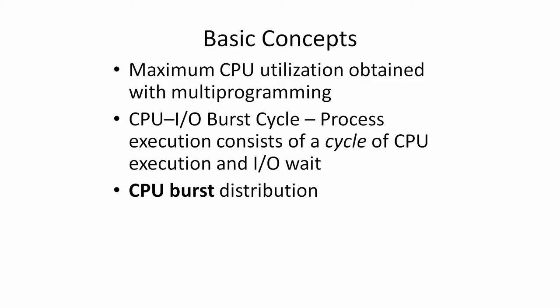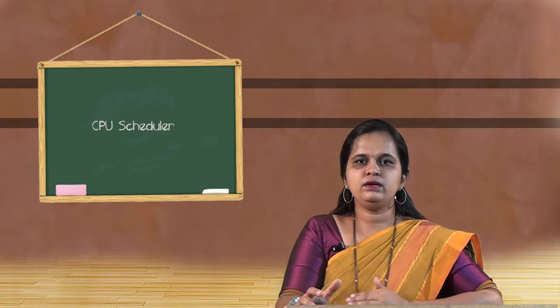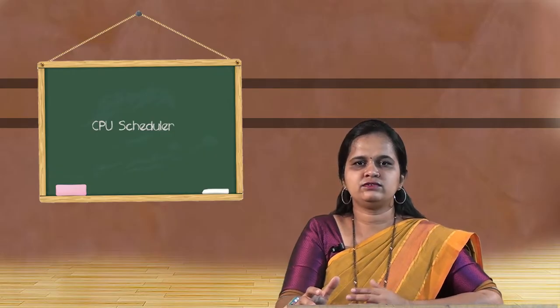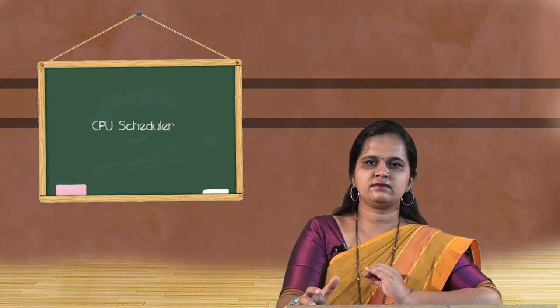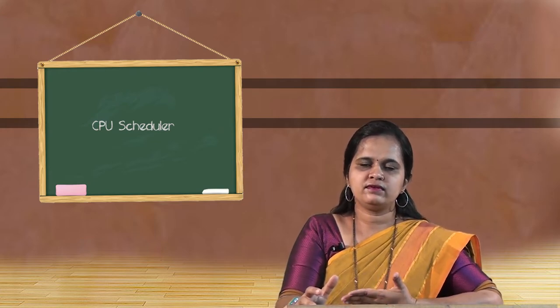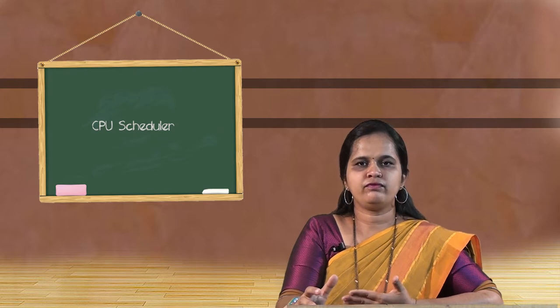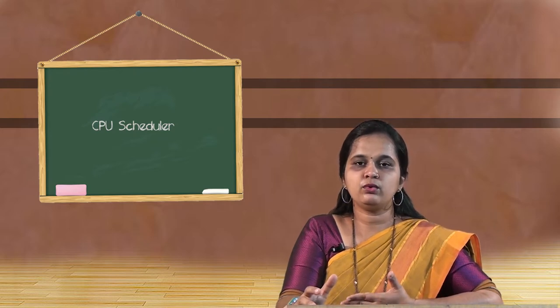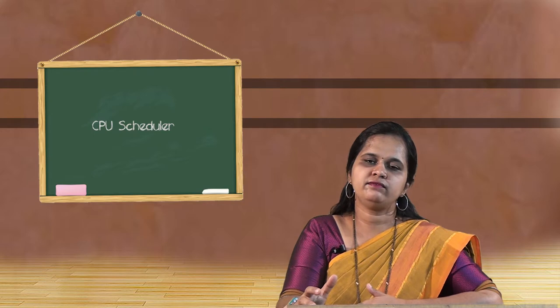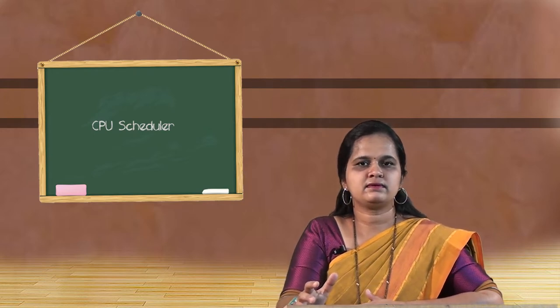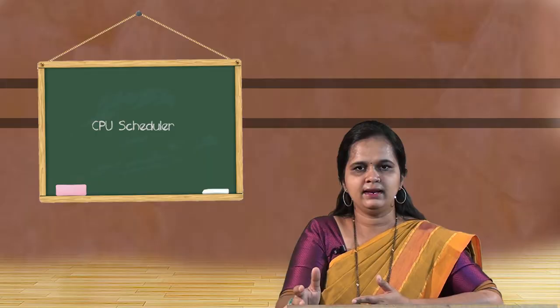The first basic concept of CPU Scheduling is that the CPU should be utilized to the maximum extent. To achieve multiprogramming — that is, executing more than one process — the CPU has to be utilized to the maximum extent. More processes executed means more multiprogramming is achieved. Therefore, the CPU should be utilized to the maximum extent by not leaving the CPU idle.